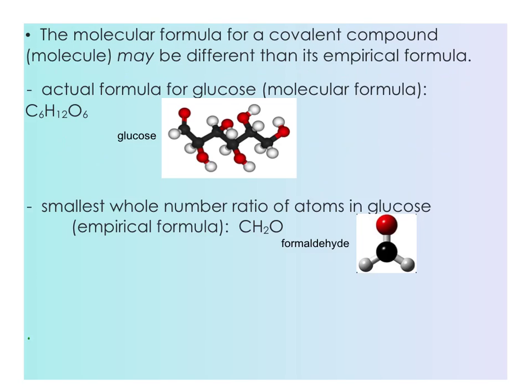The molecule glucose has a molecular formula of C6H12O6. This is its actual chemical formula. The subscripts in this chemical formula can be reduced to a smaller whole number ratio, CH2O. That would be the empirical formula for glucose. So the molecular formula and the empirical formula here are different.